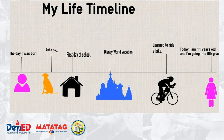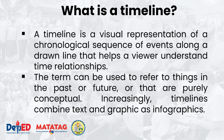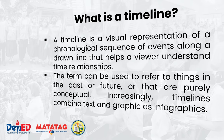I have here a simple life timeline, also present in your modules. A timeline starts with the day you were born and the significant events of your life up to the present. A timeline is a visual representation of a chronological sequence — sunod-sunod — along a drawn line that helps a viewer understand time relationships. Timelines can refer to things in the past, future, or that are purely conceptual, and they are composed of text and graphics that serve as infographics giving more details.